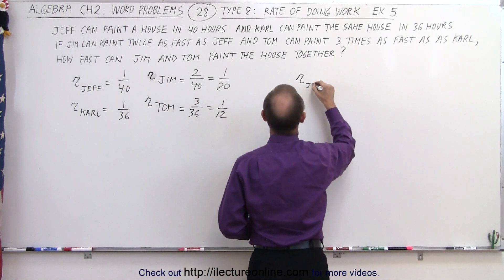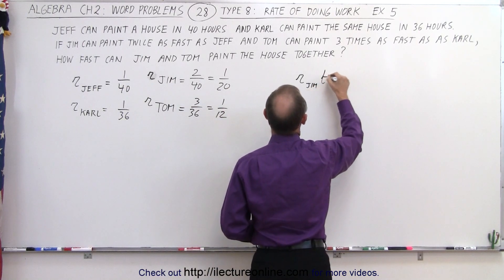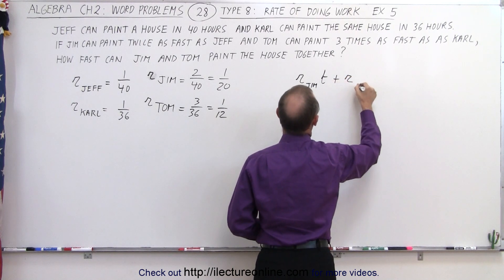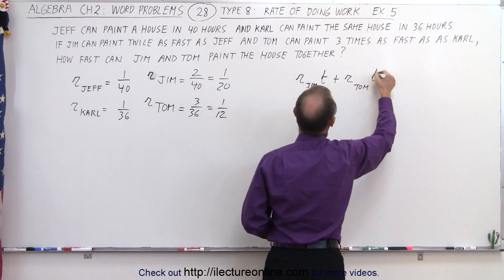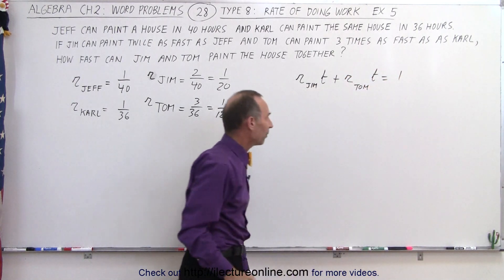So the rate of Jim times the time plus the rate of Tom times the time will be equal to the whole job done.